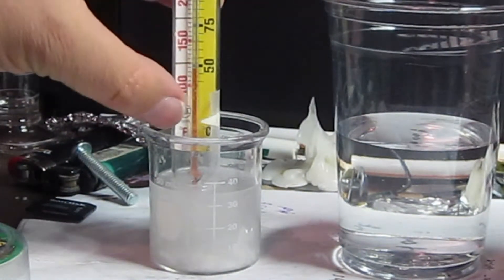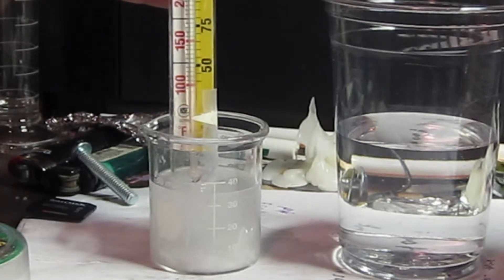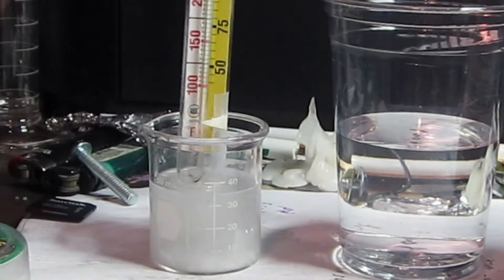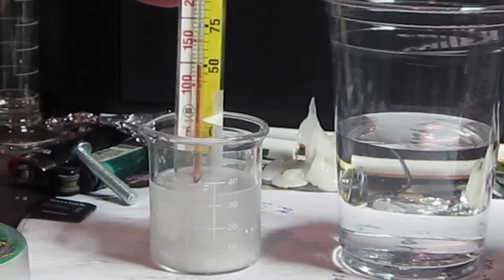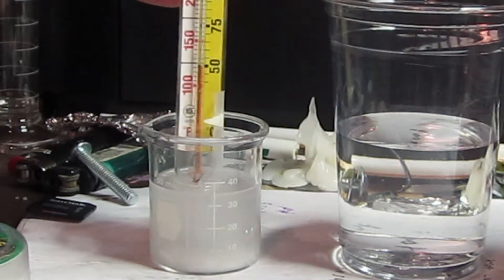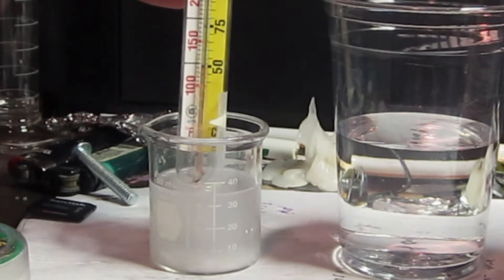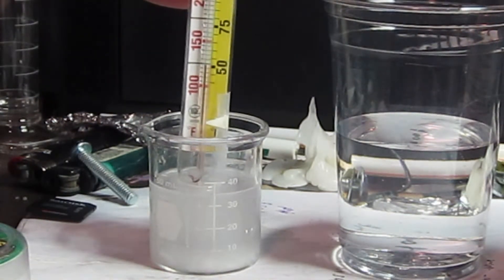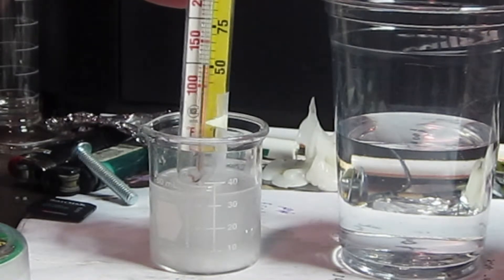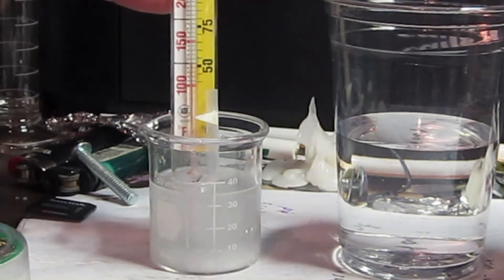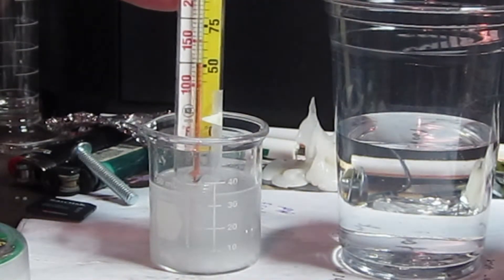So we started out down here, which is what? This is a fish thermometer. Anyway, the fish probably would not like this very much. That's Fahrenheit. So we were probably about 60 degrees. It's kind of cold down here. We've gone up to about 100 degrees with just a little sodium hydroxide.